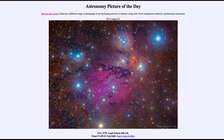It looks blue for a couple of reasons. First of all, those stars are emitting primarily blue light, but also the dust particles are much better at scattering blue light — blue light ends up being scattered around by the dust particles and red light passes through better. So we tend to see them as blue, and we see those types of nebulae around some of the brighter stars here.